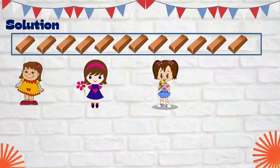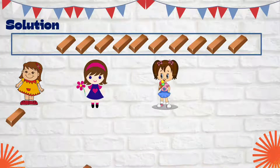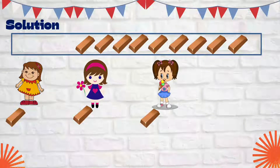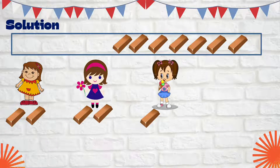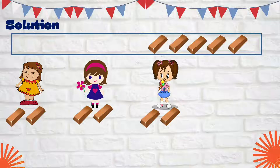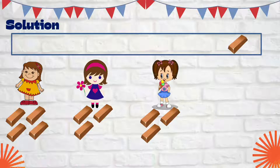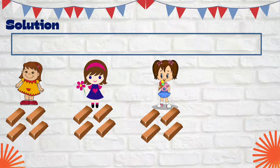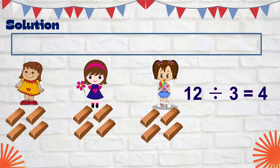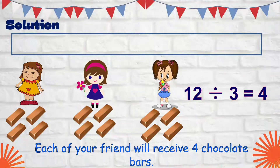Let's distribute the chocolate bars: one for you, one for you, one for you. We have more, so let's continue — another one, one, one. We still have more, and we have 3 left — let's distribute those too. Each one gets 4 chocolate bars. So when we divide 12 by 3, the answer is 4. Each friend will receive 4 chocolate bars.